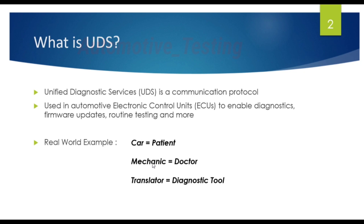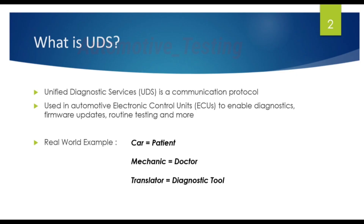Based on the information received, the mechanic diagnoses the issues and decides what needs to be fixed — like replacing a faulty sensor or adjusting some settings, because the check engine error is showing. After fixing the problem, the mechanic can use the diagnostic tool again to ask the car if everything is okay, and the car can confirm if the issue is resolved or not. That is how UDS works in real-world scenarios.